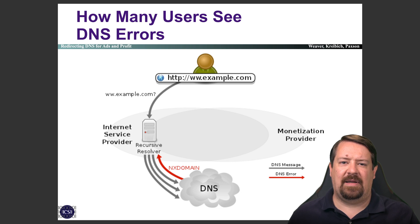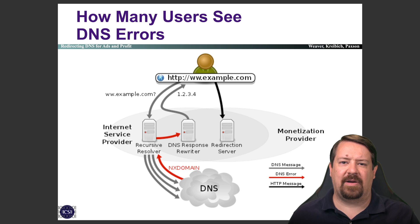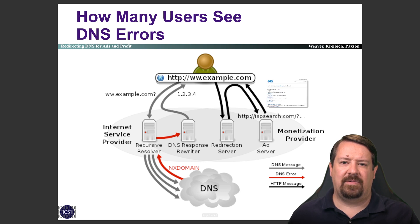However, in many cases, the internet service provider instead redirects it to a DNS response rewriter. So it takes the NX domain and returns back an IP address instead, telling the client that this is in fact a valid query and redirecting it somewhere. That result sends the browser to the redirection server, which gives back an HTTP redirect that sends them to an ad server. So now this becomes a way to serve more ads to the user rather than telling them that they went to an invalid domain name.